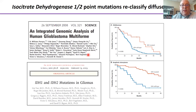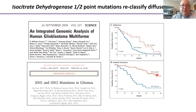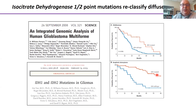The next year, the same group sequenced the lower-grade gliomas — grade 2 and grade 3. Unlike grade 4, most of these are IDH mutated, about 80%. Those familiar with IDH in other tumors like cholangiocarcinoma and AML know that IDH mutation is actually worse in those contexts. But in brain tumors, gliomas, having an IDH mutation has an actual survival benefit and is better for the patient.